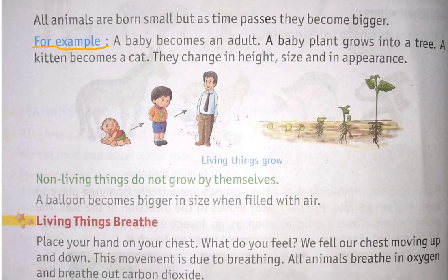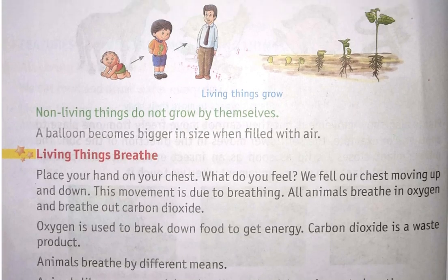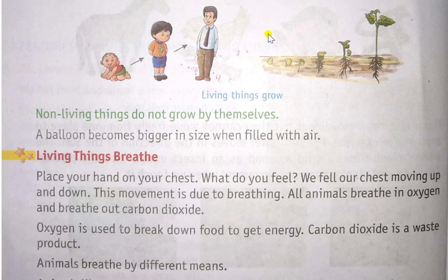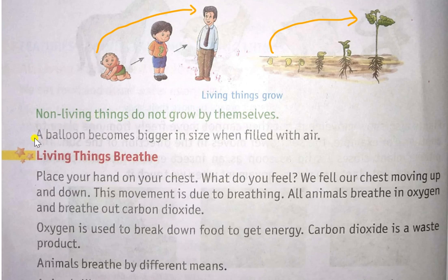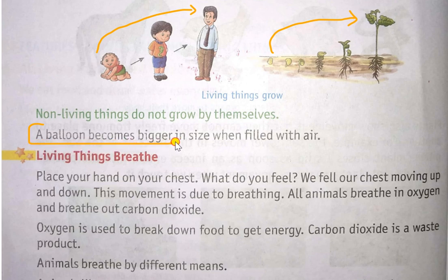A small child becomes an adult over time, increasing in size. A tiny seed and small plant convert into a tree, and a kitten changes into a cat. There are changes in height, size, and appearance. Living things grow, but non-living things do not grow by themselves. A balloon becomes bigger when we fill it with air, but it is we who put the air in — it does not grow on its own.